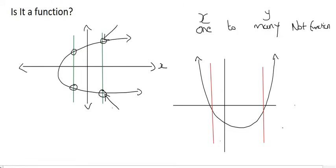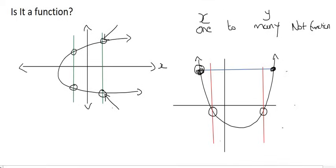This graph is a function because the vertical line only cuts once. And if we had to connect these two points, they have the same y value but different x values. We call that a many-to-one, because there are many x values to one y value — these two y values are the same but they have different x values. And that is called a function.